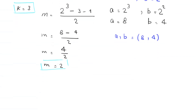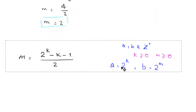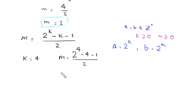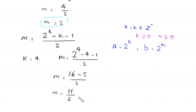We set k equal to 4. So m equals (2 to the power 4 minus 4 minus 1) divided by 2. Since 2 to the power 4 is 16, this becomes (16 minus 4 minus 1) divided by 2, giving 11 over 2, which is not an integer. So k equals 4 gives no solution.